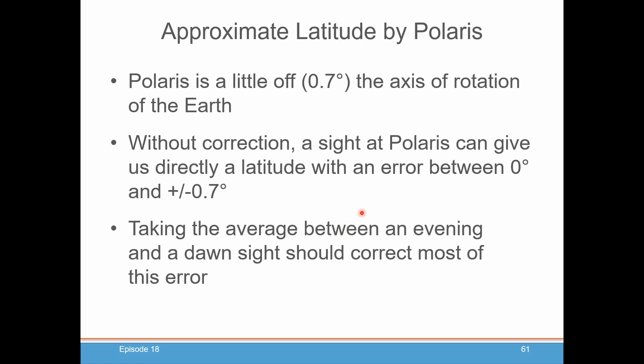Now, we're going to show you in a later episode a way to get it exact just with one sighting. But this is a very, you know, you've lost your books and you forgot how to do this. This is one way to get around it by taking an average of an evening and a dawn twilight sight.